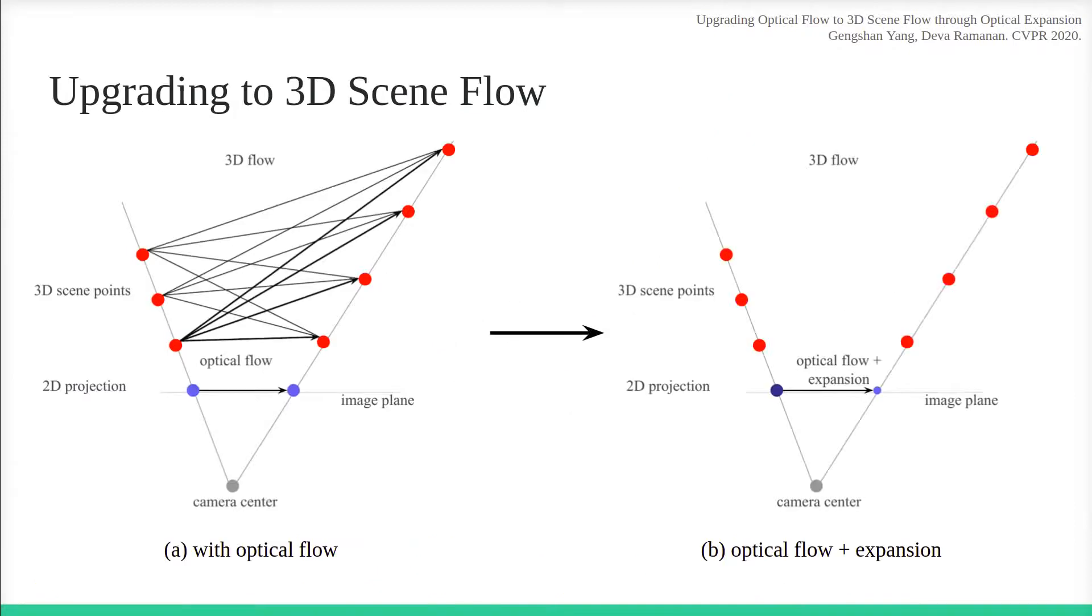Recall there are two degrees of freedom specifying all 3D vectors consistent with the given 2D optical flow. By inferring change in depth, we eliminate one degree of freedom.